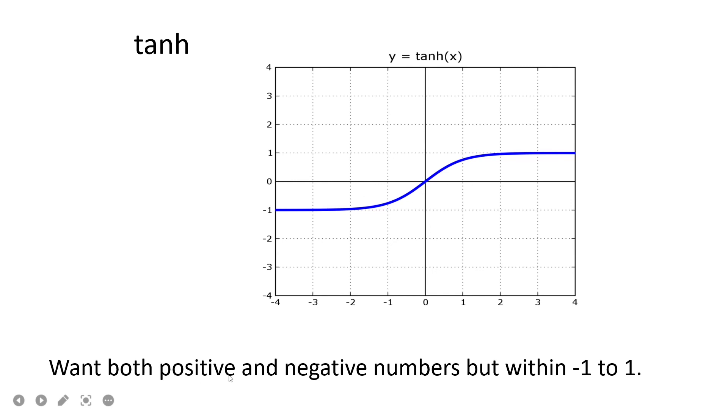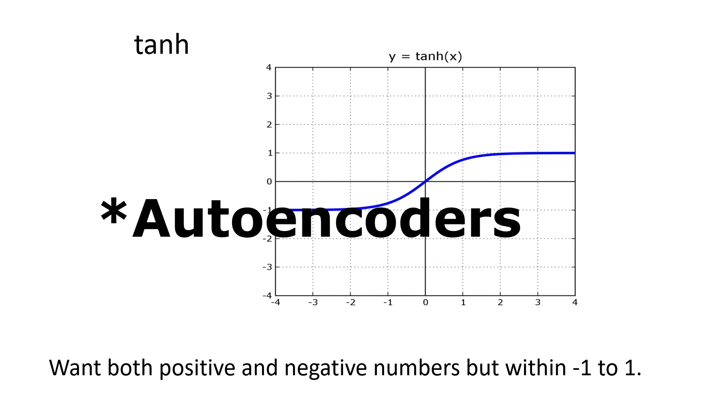So you can use it in places where you want both negative and positive values but within a range of minus 1 to 1. So it normalizes as well as gives you both positive and negative values. Again, mostly I have used it in the intermediate layers. So let's say for example, you are training a GAN or something. So in the bottleneck layer, I use tanh most of the time.